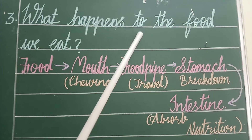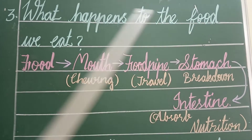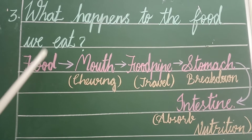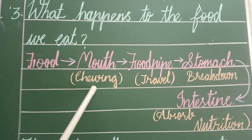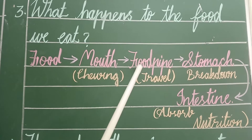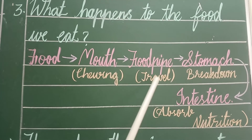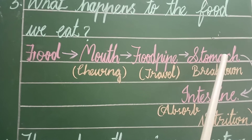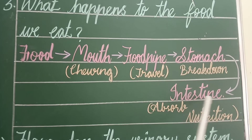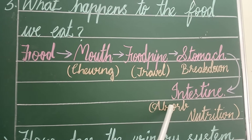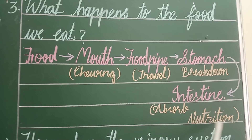Third question: What happens to the food? Food enters the mouth, chewing happens, then it travels through the foodpipe to the stomach where it breaks down, and then the intestine absorbs the nutrition.